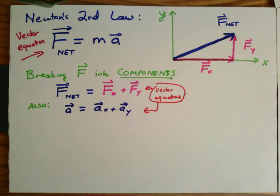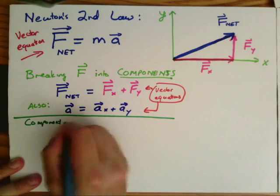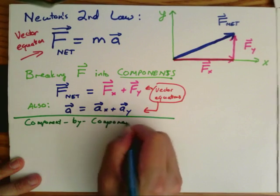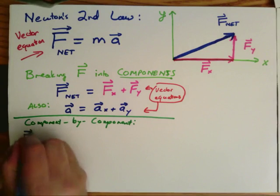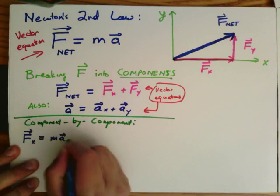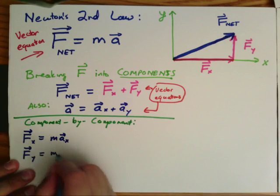Now, if it's true that Newton's second law is true as a vector equation, then it must also be true in each of the components. In other words, we can write down Newton's second law component by component, which is to say the net force in the x direction, F sub x, is equal to M times the acceleration in the x direction. And the net force F sub y is equal to M a sub y.